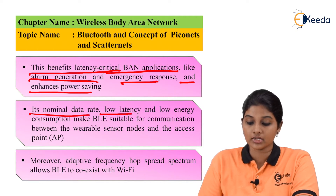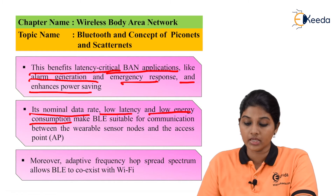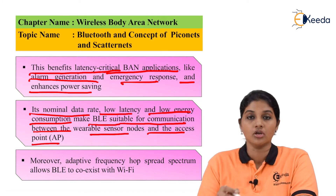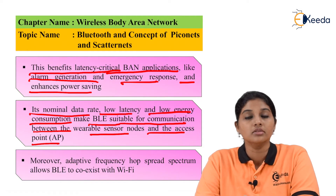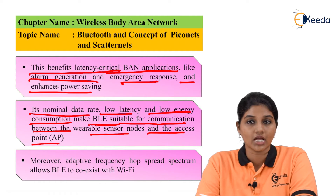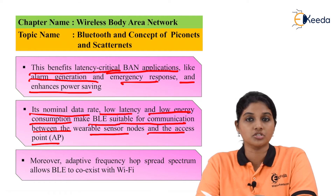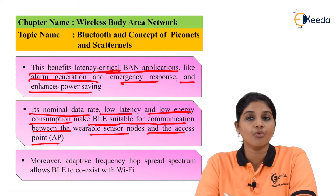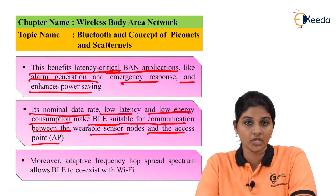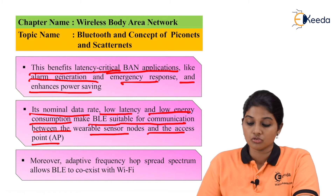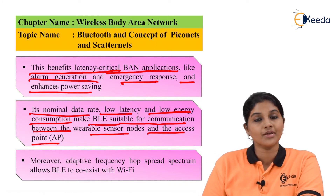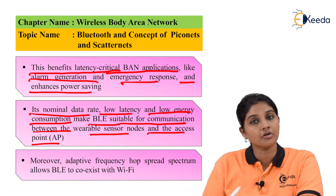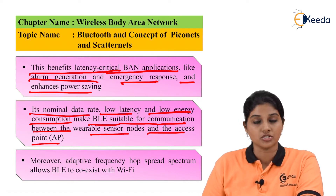The nominal data rate, low latency, and low energy consumption make BLE suitable for communication between wearable sensor nodes and access points. As discussed, BLE is mostly used in wireless body area network applications where low power consumption, low latency, and nominal data rate are required. BLE is used between wearable sensors present inside or around the human body and an access point.